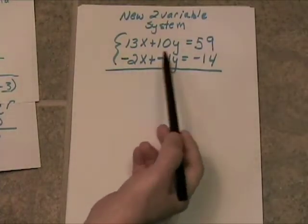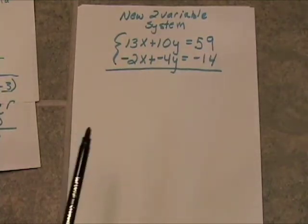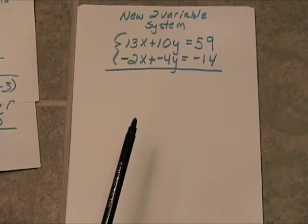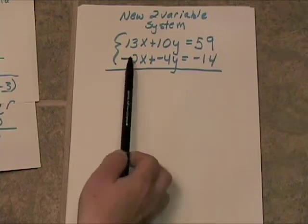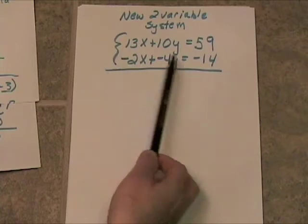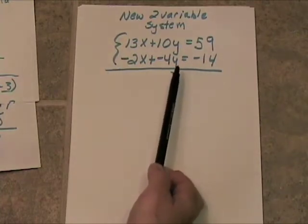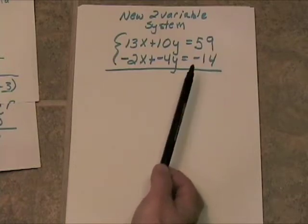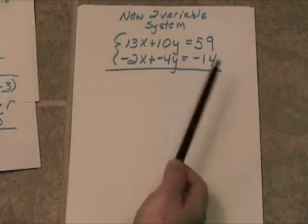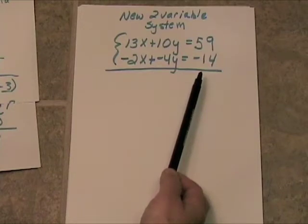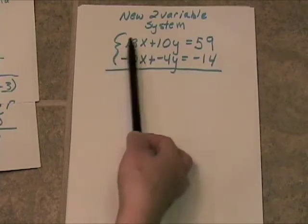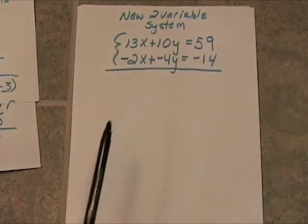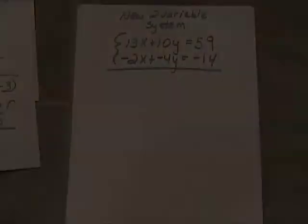Notice that if we straight add or straight subtract, nothing's going to drop out. And it doesn't look like I can multiply either the top or just the bottom by a single number and then add. But we can still do this — all we have to do is find a common multiple, and then we can multiply both the top equation and the bottom equation by some number to go ahead and solve it.